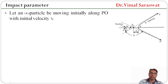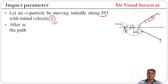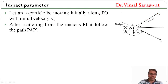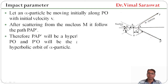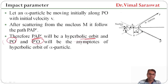Let an alpha particle be moving initially along PO with initial velocity V. After scattering from the nucleus M, it follows the path PAP dash. PAP dash will be a hyperbolic orbit and PO and P dash O will be the asymptotes of the hyperbolic orbit of the alpha particle. This is our hyperbolic path and these dotted lines show the asymptotes of the hyperbolic orbit of the alpha particle.